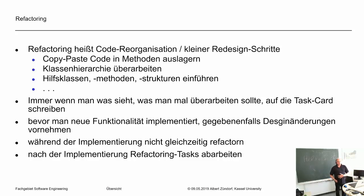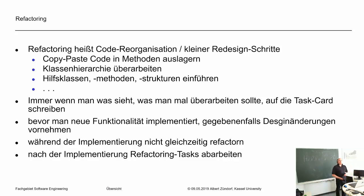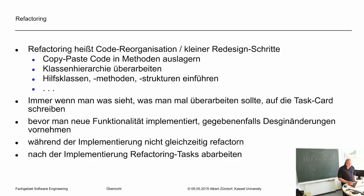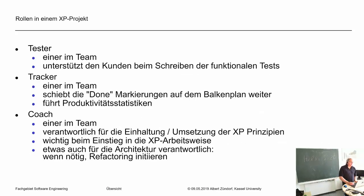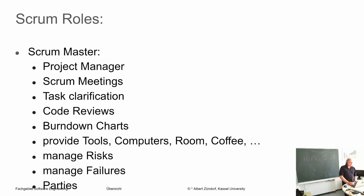Zu der Zeit, als man auf C und C++ orientiert hatte, konnte irgendein dusseliger Anfänger hingehen, in eine Header-Datei Dinge reinschreiben, die Konflikte bei globalen Variablen erzeugt haben und das komplette Programm, das schon seit 30 Jahren ohne Probleme lief, gecrasht haben. Das war früher total einfach zu versehentlich machen, dann hieß es immer: pack das bloß nicht an. Und seitdem wir dieses Test-First-Prinzip haben, können wir das ohne Probleme machen — das ist ein riesengroßer Beitrag, den die agile Software-Entwicklung hier geleistet hat.